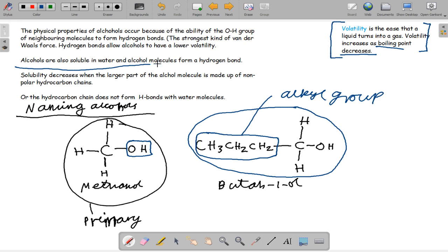So alcohol is soluble in water and alcohol molecules form a hydrogen bond. This is the slight attraction between oxygen's lone pair and hydrogen. So it brings about a slightly higher boiling point than normal. Solubility decreases with the larger part of the alcohol molecule. It is made up of non-polar hydrocarbon chains. The hydrocarbon chain does not form hydrogen bonds with water molecules, so these are not soluble in water.